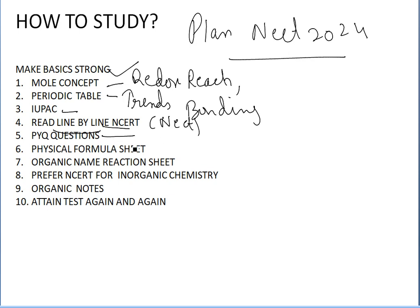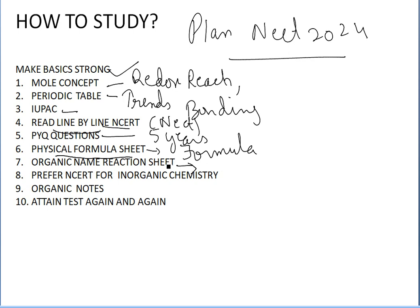Previous year questions are very important — do the previous five years' questions. You can connect with me on the WhatsApp channel and I will provide them. Make a physical chemistry formula sheet covering all the formulas. For organic name reactions, there are many — don't try to memorize them, try to understand them. Make an organic name reaction sheet and review it again and again, because these typical reactions are easy to forget.